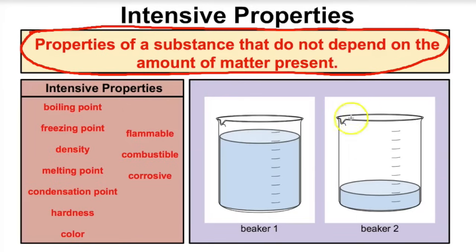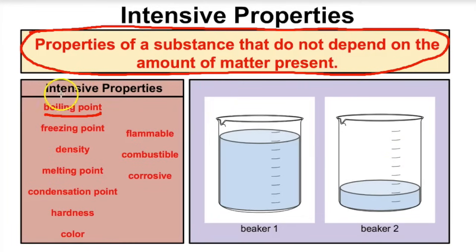If I were to ask you what the boiling point of beaker 1's water is, you might say it's 100 degrees Celsius. And if I ask you what the boiling point of beaker 2's water is, you might also say it's 100 degrees Celsius. That is because boiling point is an intensive property of matter — it doesn't matter how much substance you have. The boiling point of water is going to be 100 degrees Celsius whether you have a lot or just a little.